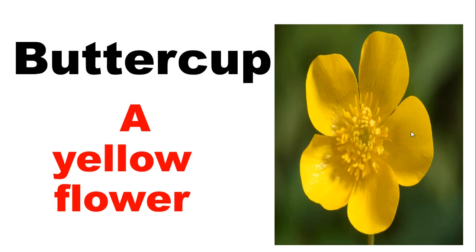What is the meaning of this word? Buttercup is a yellow flower. Here you can understand with this picture — this picture is of a yellow flower. The yellow color is just like butter, that's why this flower is called buttercup. I hope you understood.